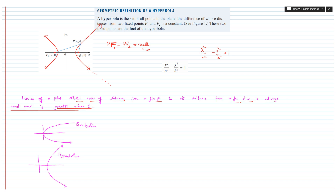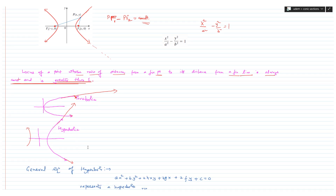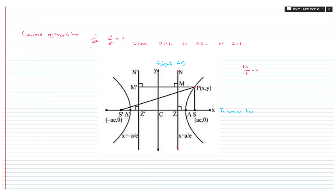We must know the basic difference between the branches of a hyperbola and a parabola. The branch of a hyperbola looks pretty similar to the branch of a parabola, but there is a fundamental difference. At infinity, the nature of a parabolic curve flattens out, while the nature of a hyperbolic curve opens up. This is how we can differentiate a parabolic curve from a hyperbolic curve.